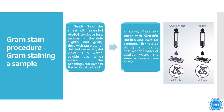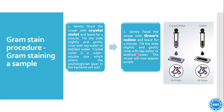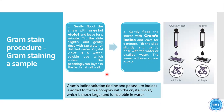We should be familiar with the gram staining procedure. Gently flood the smear with crystal violet and leave for one minute. Tilt the slide slightly and gently rinse with tap water or distilled water. Crystal violet is a water-soluble dye which enters the peptidoglycan layer of the bacterial cell. Gently flood the smear with gram iodine. Iodine and potassium iodide are added to form a complex with the crystal violet, which is much larger and insoluble in water.